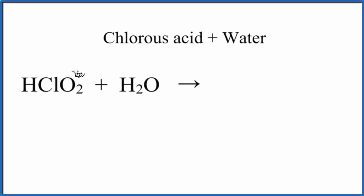In this video, we'll look at what happens when we have HClO2 in H2O, chlorous acid plus water. The first thing we need to realize is that HClO2, this H in the front, makes us think this is going to be an acid.